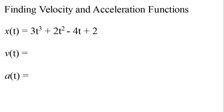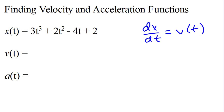Let me give you a quick example problem. We're given this position-time function — it is not a linear function at all; it is definitely a polynomial. To find the velocity, I'm going to take the derivative of the position with respect to time, and that gives me my velocity function. Using the power rule: 3 times 3 is 9, giving t squared; 2 times 2 is 4, giving t to the first power; minus 4. That is my velocity-time function.